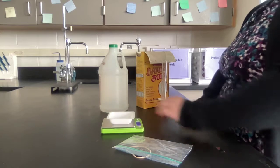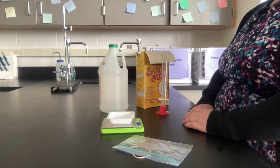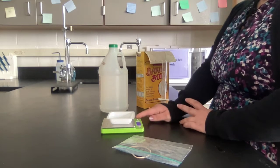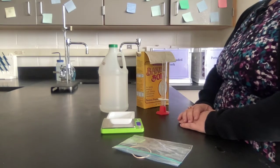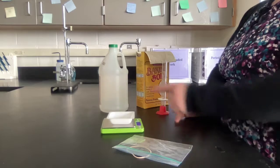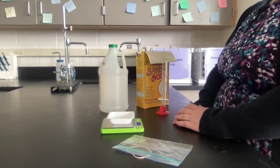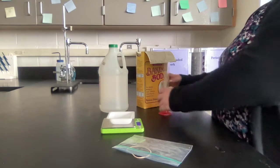Take your weigh boat, place it on your balance, make sure the balance is turned on, and then hit the T button which is all the way over to the right-hand side, and that's going to tare it. That means it will set it to zero with the weigh boat on there.